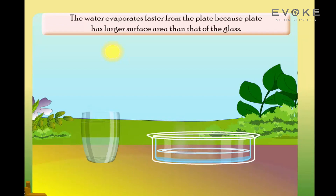The water evaporates faster from the plate because the plate has a larger surface area than that of the glass.